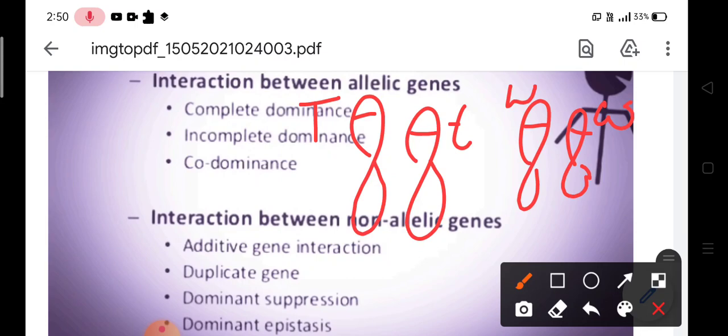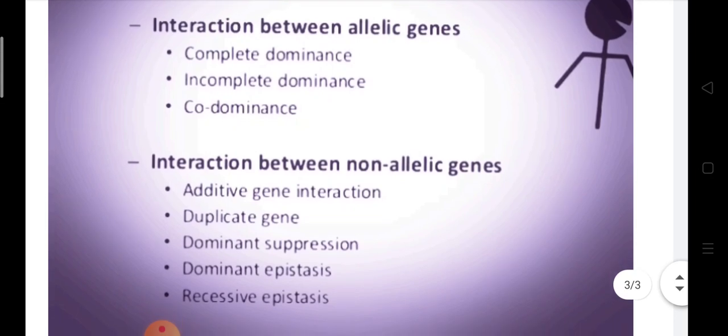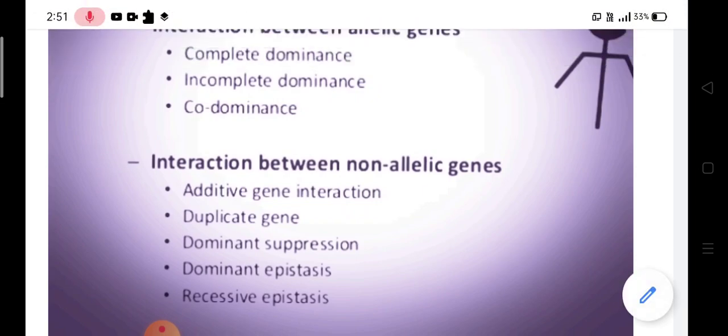But they influence each other in some or the other way. This type of interactions we will be covering in additive gene interaction, duplicate gene interaction, dominant suppression, dominant epistasis, and recessive epistasis.